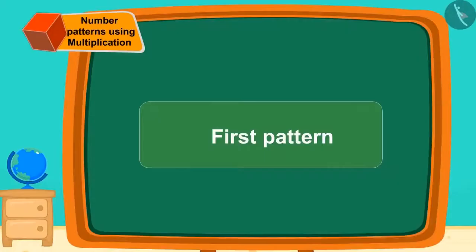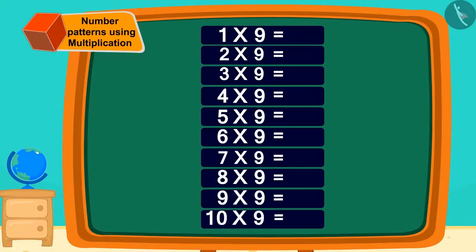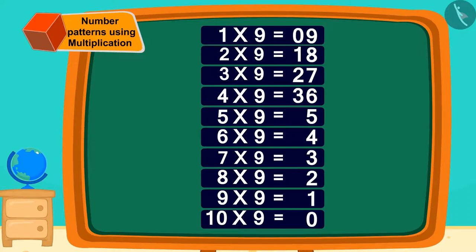Let us see two unique patterns to memorize the table of 9 easily. To make a multiplication table of 9, first write the numbers in decreasing order from 9 to 0 in this way. Now, write a number like this from 0 to 9 next to these numbers. Isn't that easy?